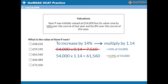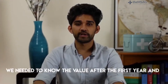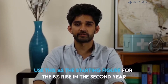And now, can you increase this by 8%? Did you get 66,484.8? Great. That's because we multiply our previous answer by 1.08 to increase by 8%, giving us 66,484 pounds. Note that in a question like this, which looks at growth over time, we need to know the value after the first year and use this as a starting figure for the 8% rise in the second year.